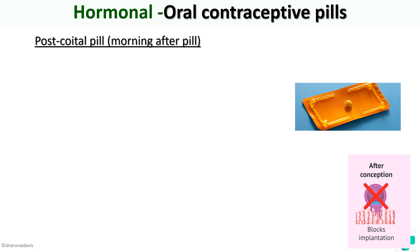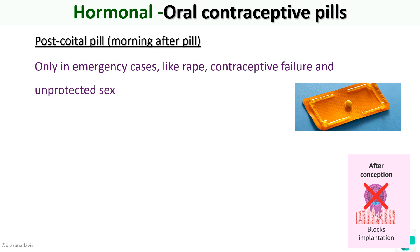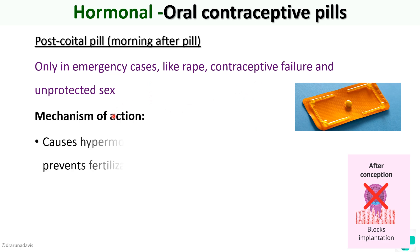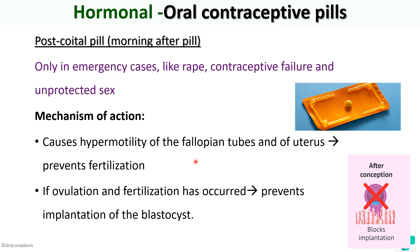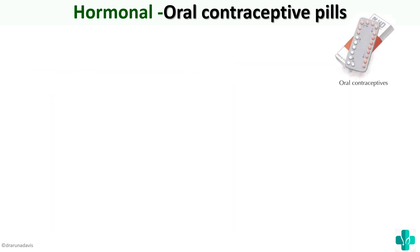The post-coital pill, or morning-after pill, is used only in emergency cases such as rape, contraceptive failure, or unprotected sex. Its mechanism of action is that it causes hypermotility of the fallopian tubes and the uterus, so that fertilization will not take place. And even if fertilization has occurred, it prevents the implantation of the blastocyst.